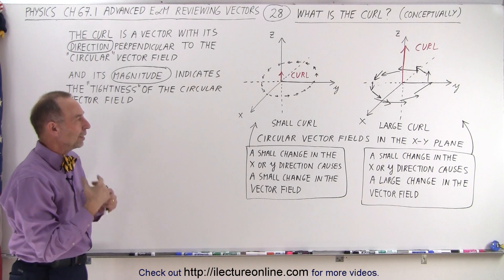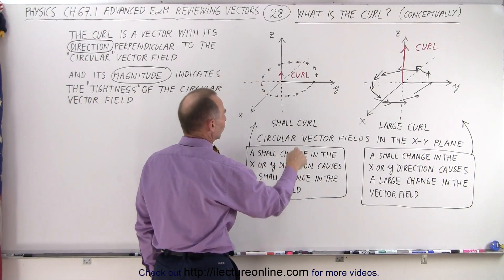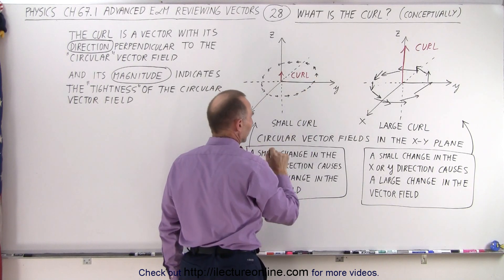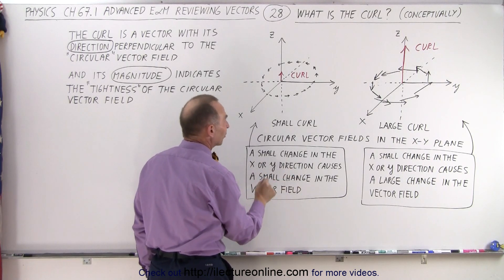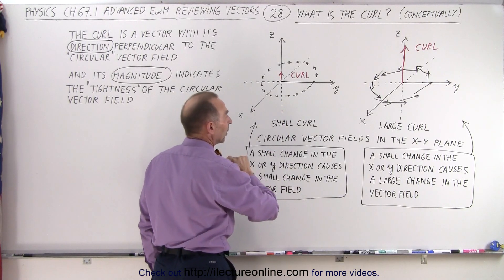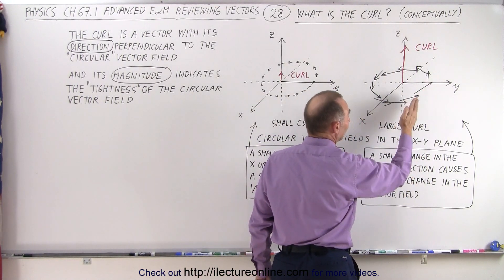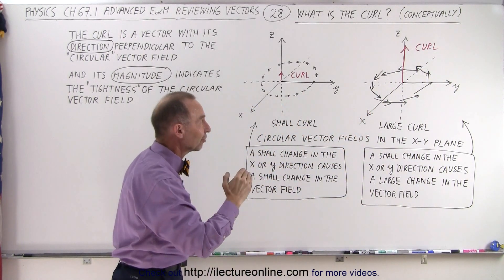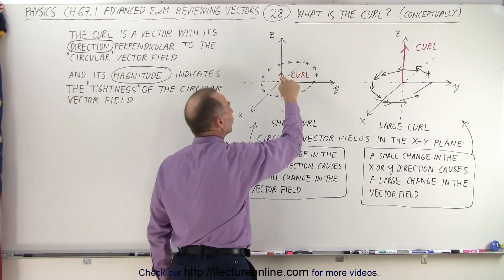The magnitude of the curl indicates the tightness of the circular vector field. What does tightness mean? If you make a small change in the x or y direction, and there's not a lot of change in the direction and magnitude of the vector field, that causes a small curl. But in this particular case, if the magnitude of the vector field is much larger, a small change in the x or y direction causes a much larger change in the vector field — therefore, a larger curl.